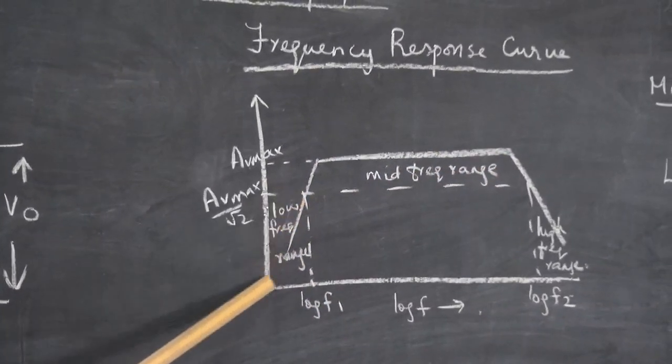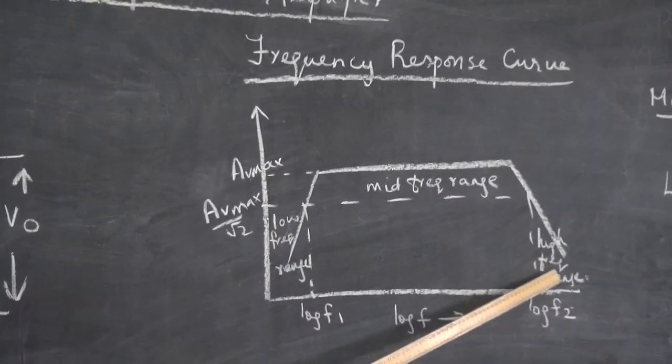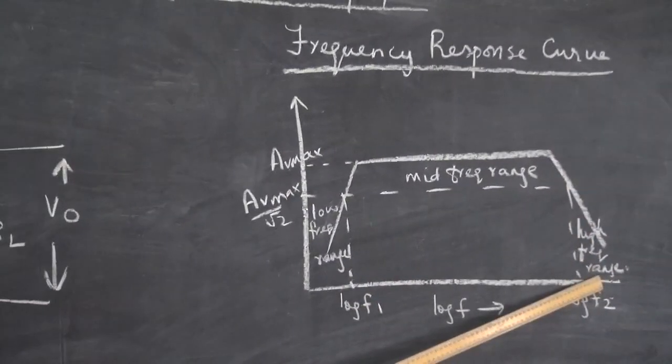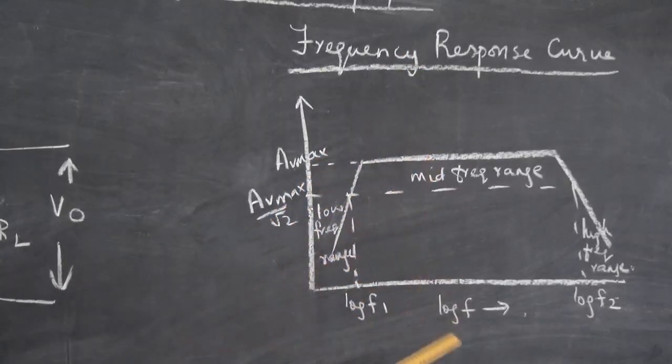You have the low frequency range: as frequency decreases, gain is falling. You have the high frequency range: as frequency increases, gain is falling. So the RC coupled amplifier has this type of frequency response curve.